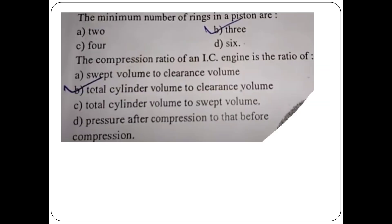Question: What is the minimum number of rings in a piston? The minimum number of rings is 3.